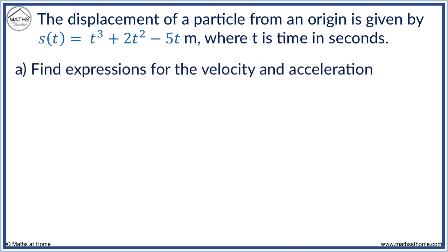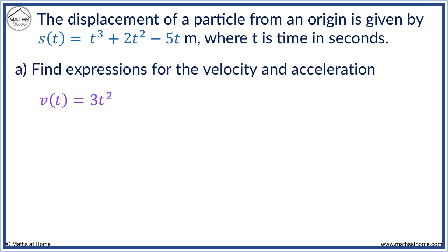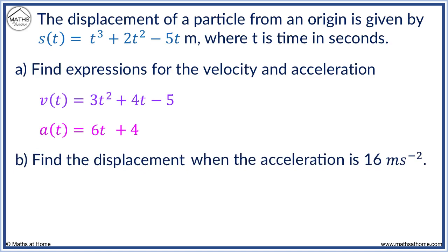We differentiate S to get V. We get 3T squared plus 4T minus 5. We differentiate V to get A equals 6T plus 4. Now we will find the displacement when the acceleration is 16 meters per second squared.